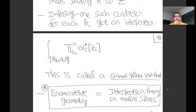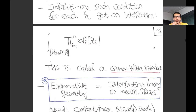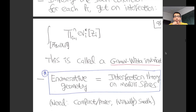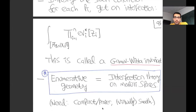This illustrates a general principle: enumerative geometry is the same thing as performing intersection theory on moduli spaces. One thing you need in order to do this is for your moduli space to be compact or proper—otherwise when you cut down to get a zero cycle, it might not consist of finitely many points. You also need some smoothness hypothesis, or in general something called virtual smoothness, which is central to the theory.